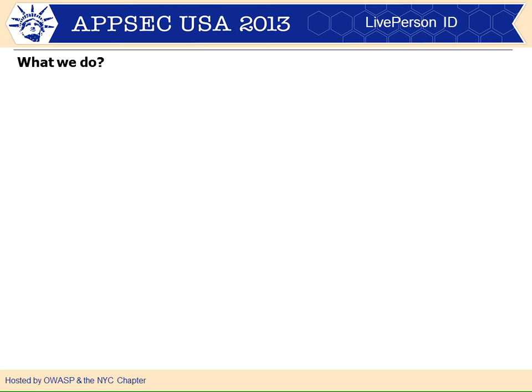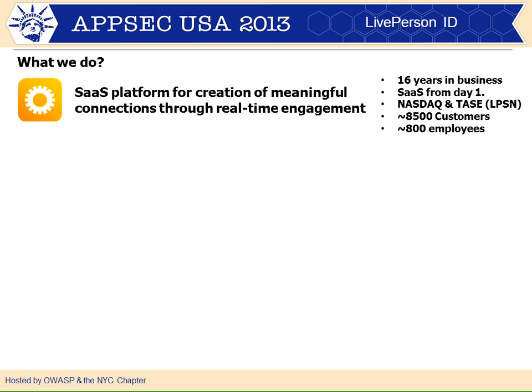To give you some color about what security means for LivePerson, let's first understand who we are and what we do. LivePerson is a SaaS platform that creates meaningful connections through real-time engagement. We have been in the industry 16 years, we are SaaS from day one, we are public, we have a lot of customers in different verticals, and we have 800 employees. When I came to LivePerson four years ago we were about 200 employees and grew to 800, which is a challenge in terms of governance and managing your SDLC program.